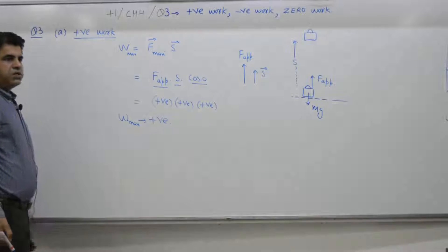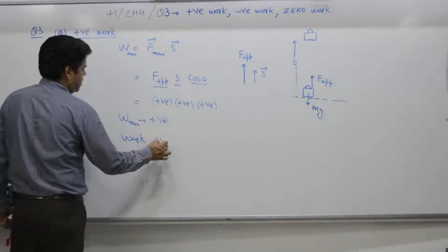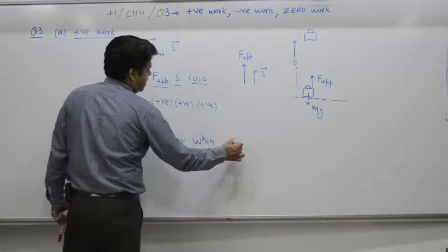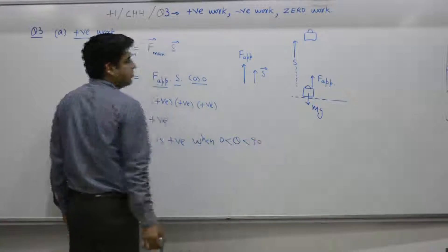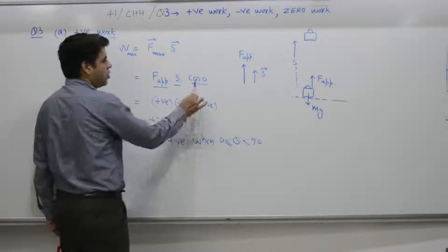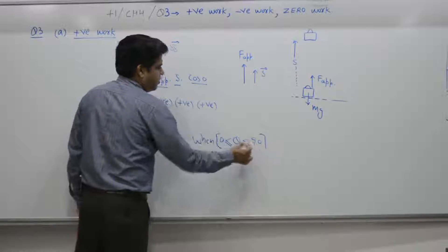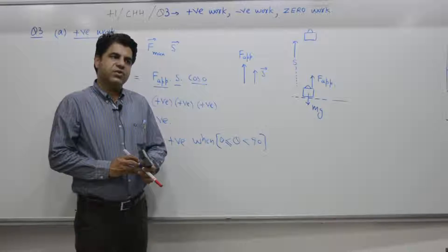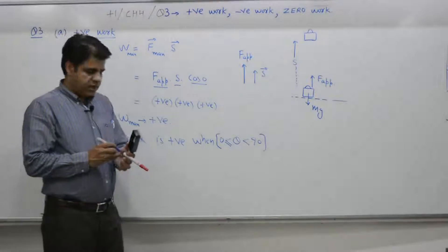Work will be positive when theta lies between zero and 90 degrees. If theta is greater than or equal to zero, cos zero is one. When theta is equal to 90, cos 90 is zero — that is why it must be less than 90, not equal to 90.